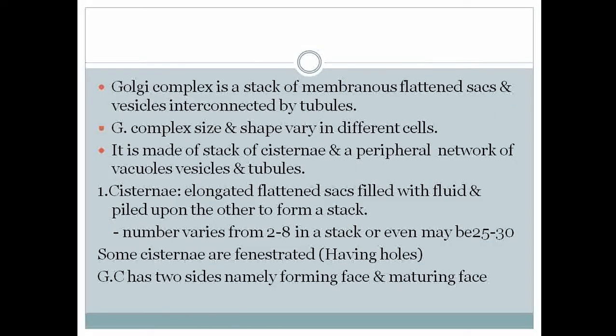The Golgi complex is a stack of membranous flattened sacs and vesicles interconnected by tubules. There are a number of stacks of membranous sac-like structures found here. The size and shape of the Golgi complex vary in different cells. It is made up of a stack of cisterni and a peripheral network of vacuoles, vesicles, and tubules.